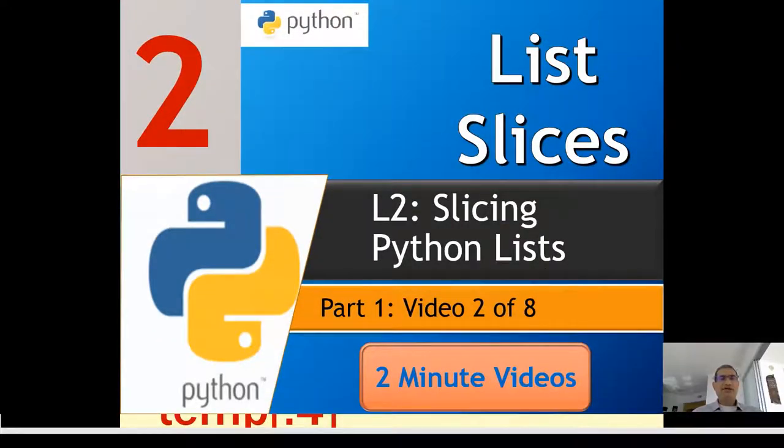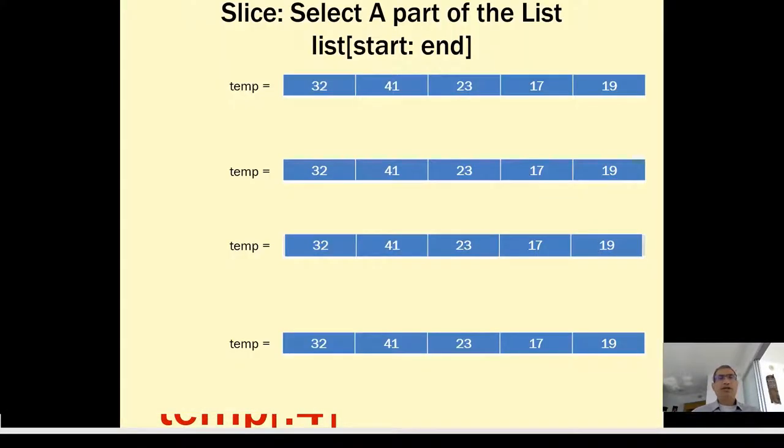Next, let us see if we can understand how list slicing works. A list slice is, as the name implies, just how we select a part of the list.